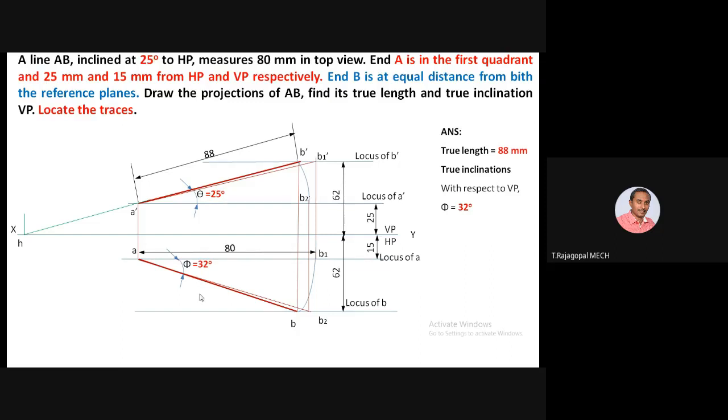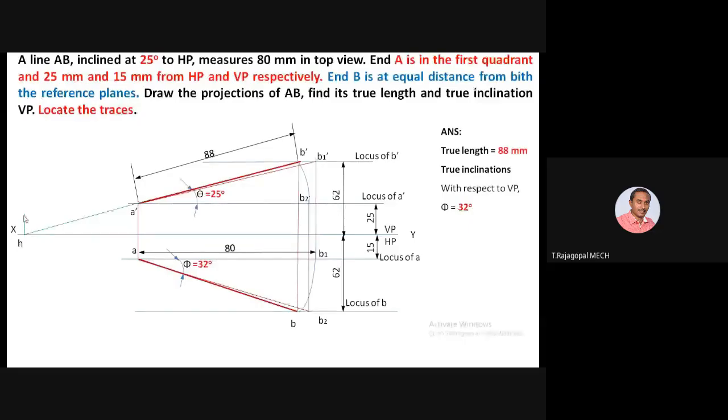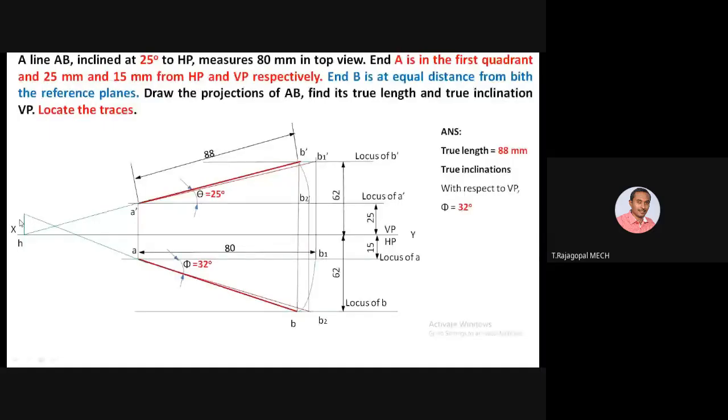After the front view line A-dash B-dash touches XY, mark that point as H-dash. From H-dash, extend a projector perpendicular to XY. Then extend the top view line AB until it meets this projector — that intersection is the horizontal trace, obtained from the top view (horizontal plane). From where the top view line touches XY, mark point V, and extend the projector to meet the front view — that is the vertical trace.